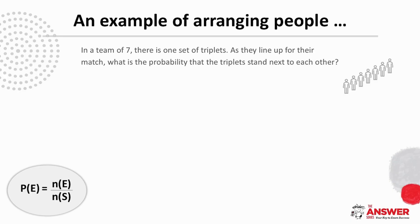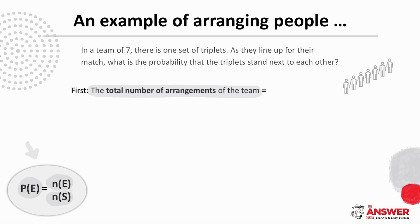Let's go straight into an example of arranging people where certain prescribed conditions are given. In a team of seven there is one set of triplets. As they line up for their match, what is the probability that the triplets stand next to each other? Because of the definition of probability, this is a three-step process: first, find the total number of arrangements of the seven team members in their line. The total number of arrangements is seven factorial, which is 5040. Remember to use your calculator for this.